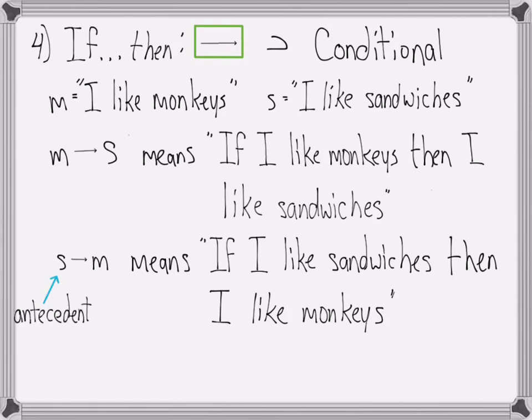The first part of a conditional is called the antecedent and the second part is called the consequent. The antecedent is the condition that has to be met for the consequent to be true. In other words, the first part is the condition and the second part is the result.